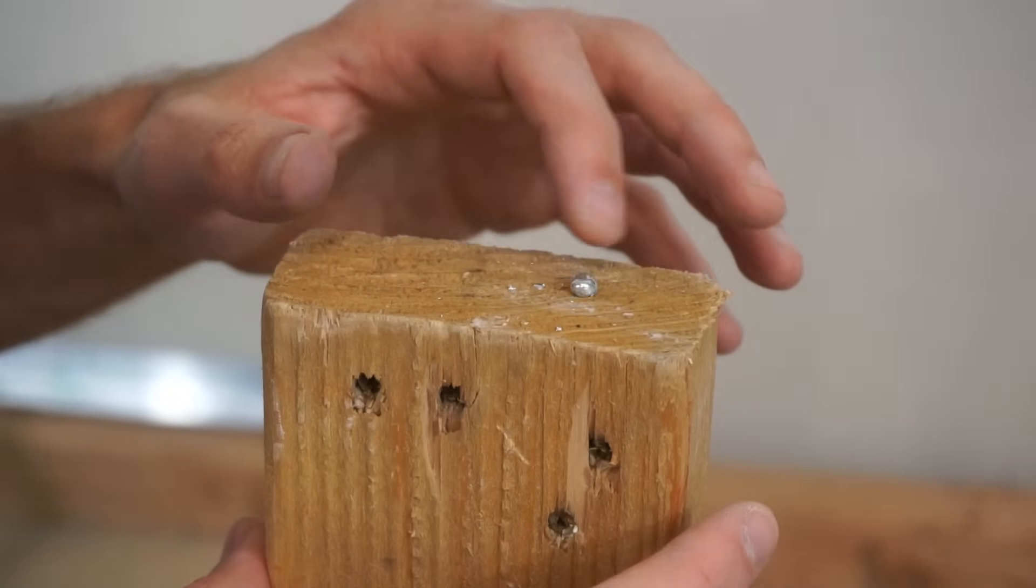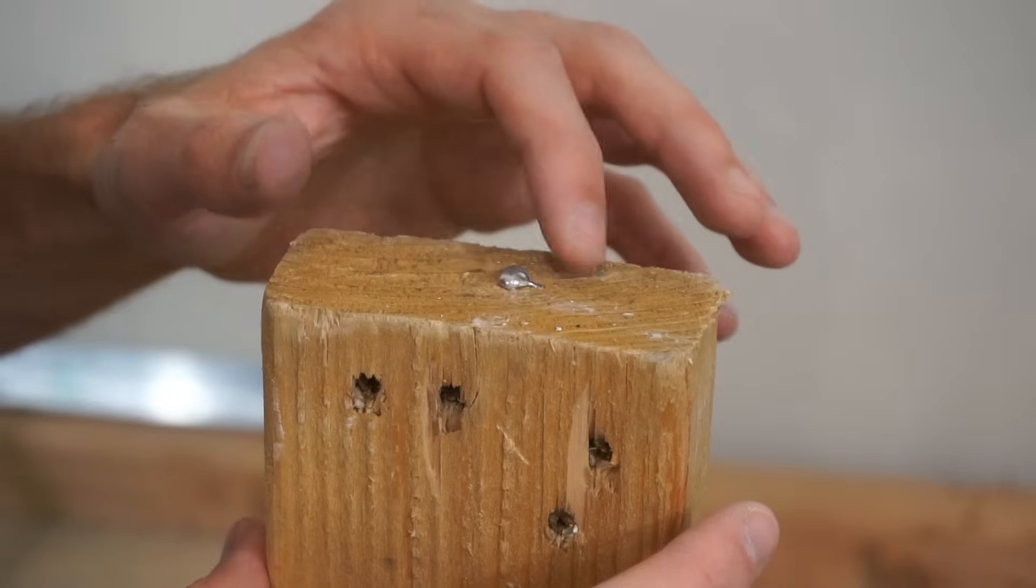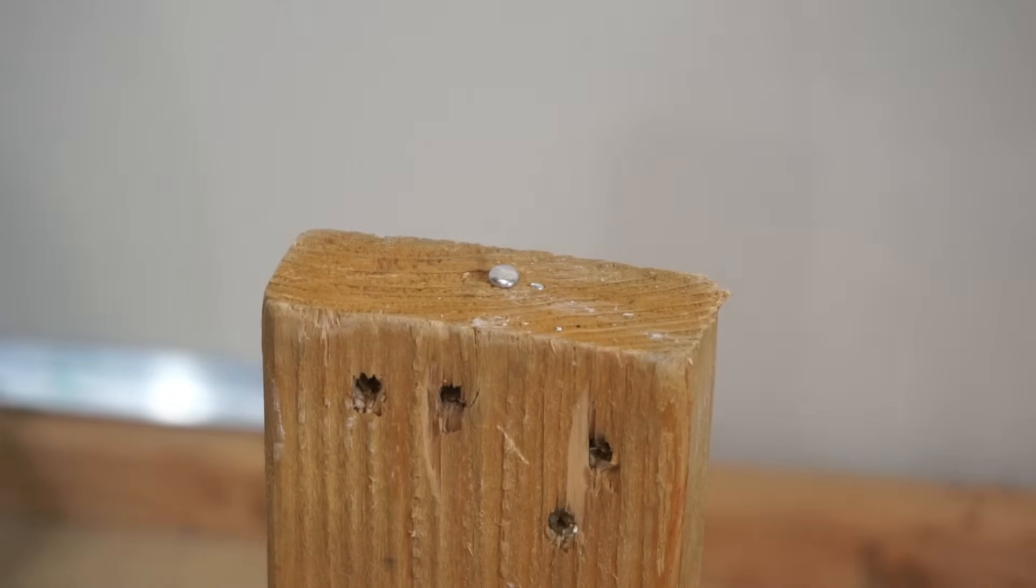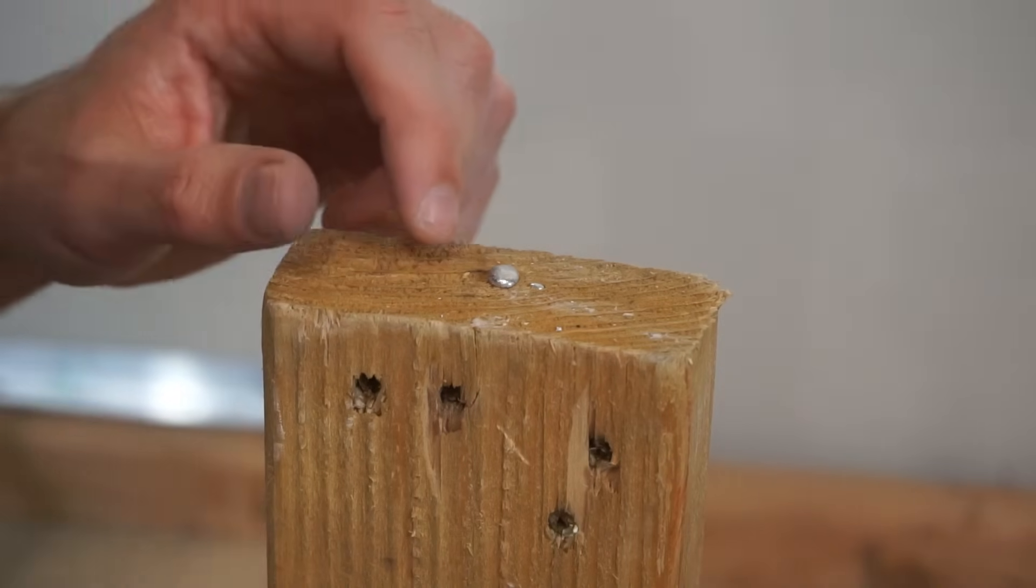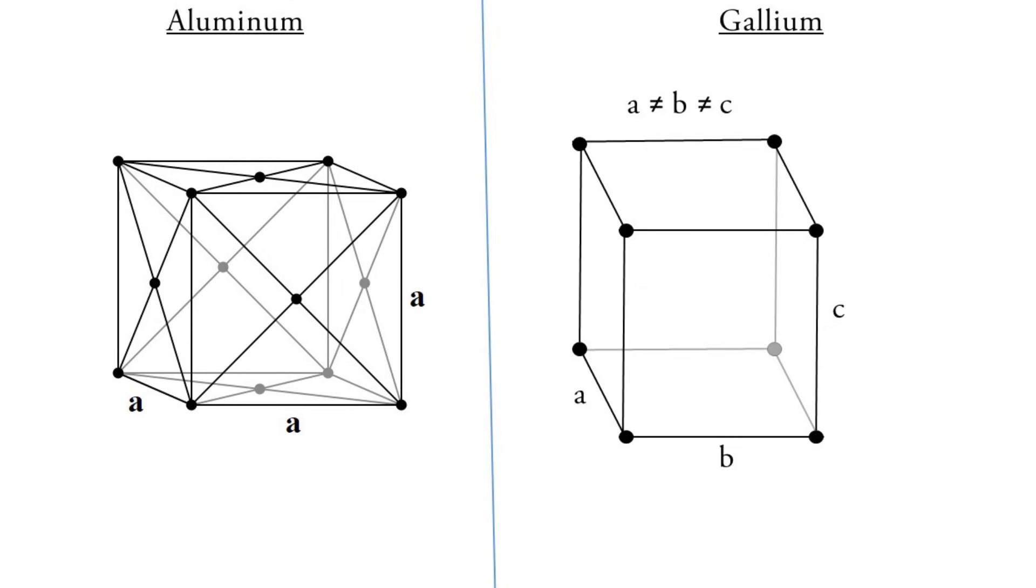Yeah, gallium is fun to play with. So what makes gallium act like this? Why can it go from a solid to a liquid at room temperature? Well, one of the main reasons is the cubic structure of the atoms in gallium versus other metals like aluminum.